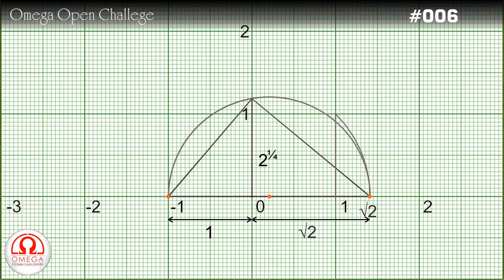Now draw an arc with the center at origin and radius equal to the altitude of the triangle. The point of intersection of this arc with the x-axis is 2 to the power 1 by 4.